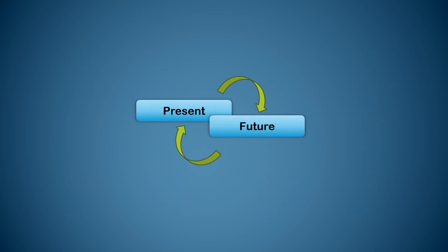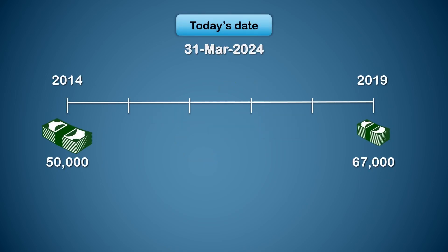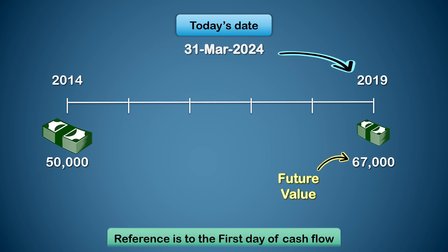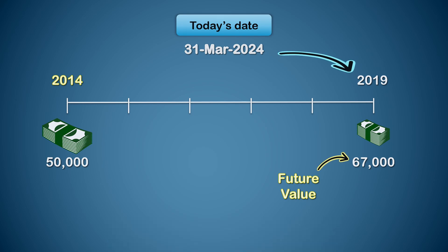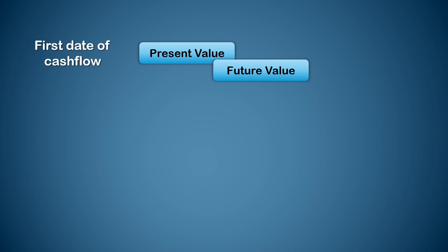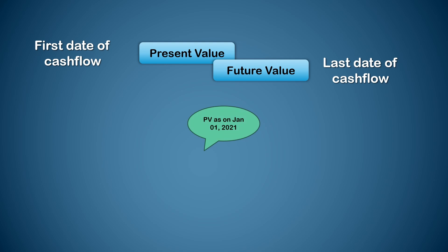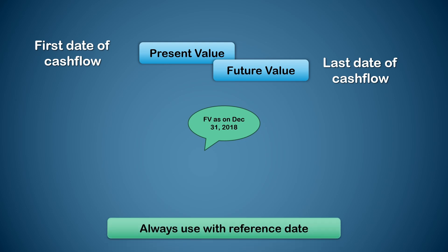The words 'future' and 'present' are only in relation to each other and not necessarily with reference to today's date. If you invested 50,000 in 2014 and got 67,000 in 2019, the 67,000 is still called future value even though it happened five years ago — not because it is in the future from today, but because it is in the future with respect to the initial date of payment, which was 2014. Present value refers to the value of investment on the first day of the cash flow, and future value is the value on the last day. That is why we always specify: present value as on a particular date, or future value as on a particular date.